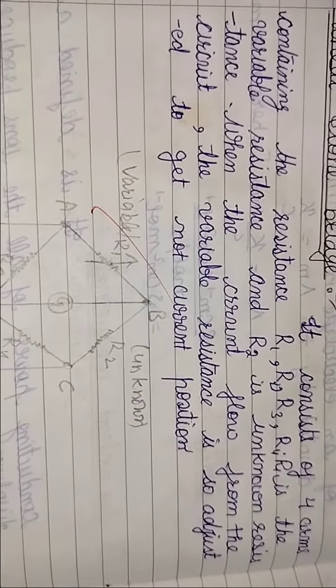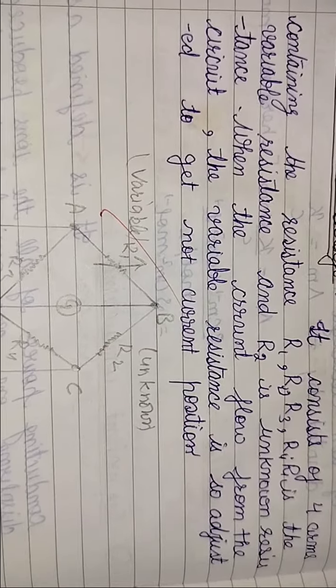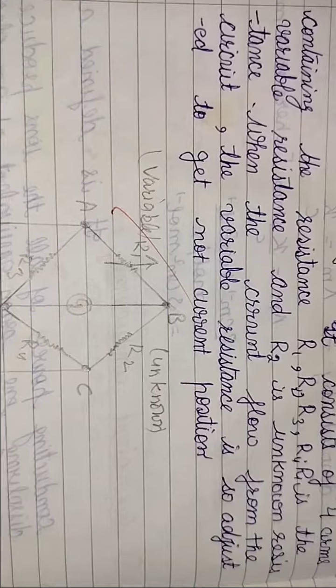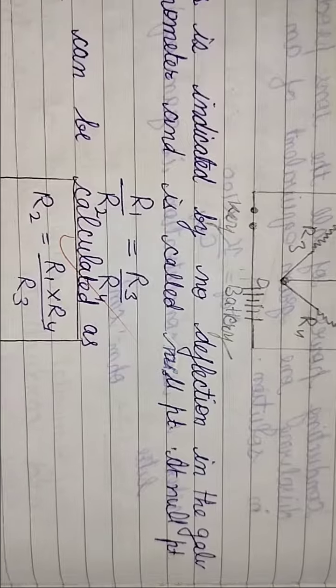find R2, which is the unknown resistance. When current flows through the circuit, the variable resistance is adjusted to get a no current position. So for the Wheatstone bridge, when we do calculations, it